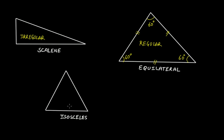In an isosceles triangle we know that one pair of adjacent sides is equal to each other but the third side is not equal. So only two sides are equal but the third side is not equal, therefore it is not equilateral — one condition fails and therefore this is an irregular polygon.